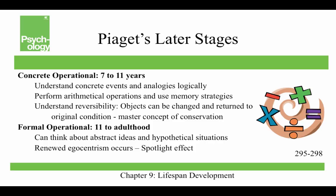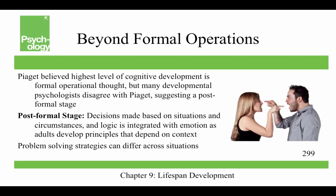The concrete operational stage is between seven and 11 years. Children understand concrete events and analogies logically, can perform math, use memory strategies, understand reversibility, and have achieved conservation — objects can be changed and returned to their original condition. The formal operational stage, from 11 to adulthood, allows thinking about abstract ideas and hypothetical situations. There is also a renewed egocentrism called the spotlight effect, where adolescents think people are watching them all the time.